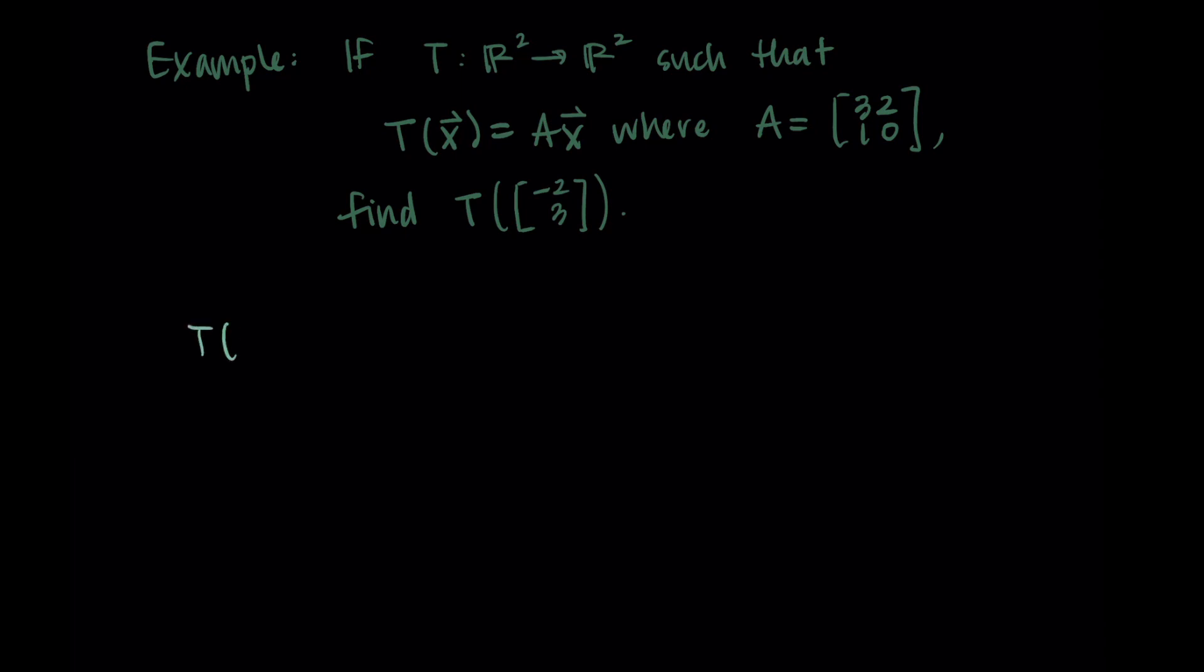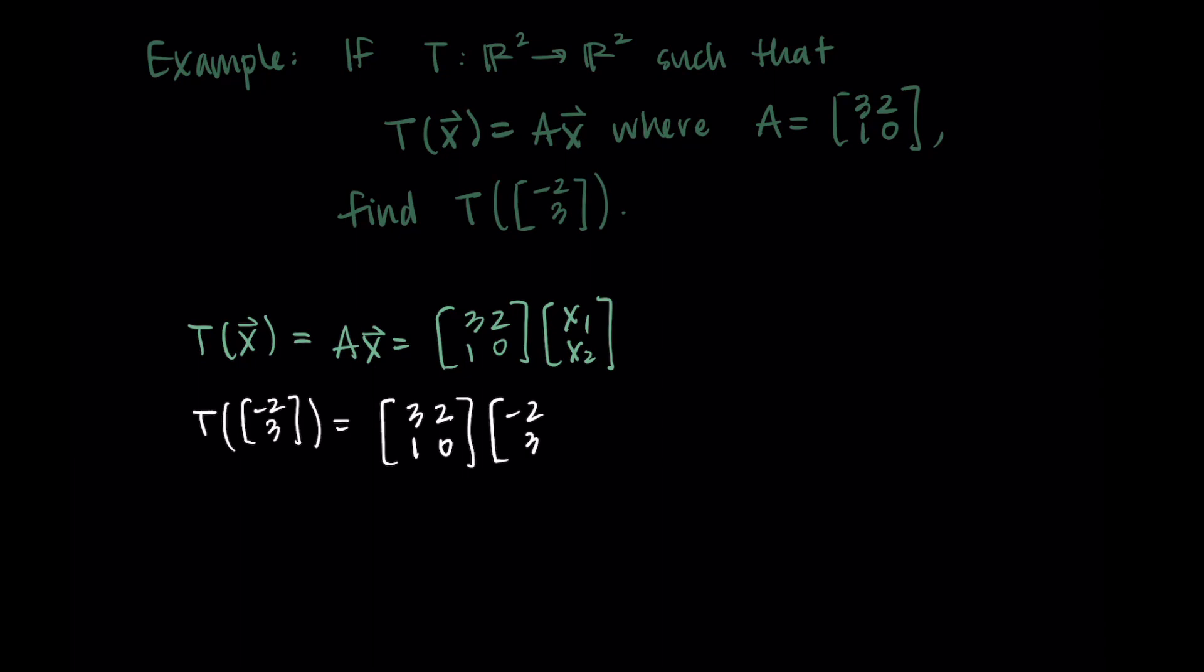So if we unpack a little bit our transformation, we have T(x) is equal to A times x. And when we substitute in our A matrix, it looks like [3, 2, 1, 0]. And then our vectors x are two-dimensional since they're in R^2. So we could say they have components x_1 and x_2. So this is the multiplication we're going to be doing as part of this transformation. Then we're inputting the vector [−2, 3], and we're going to see what happens. So I'm replacing x_1 and x_2 with −2 and 3, and then we're just going to compute this multiplication.